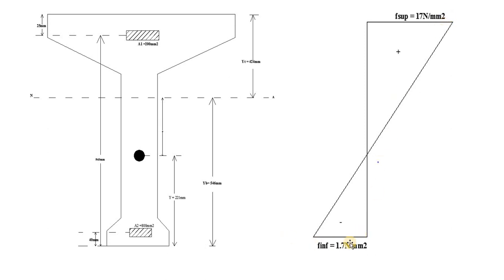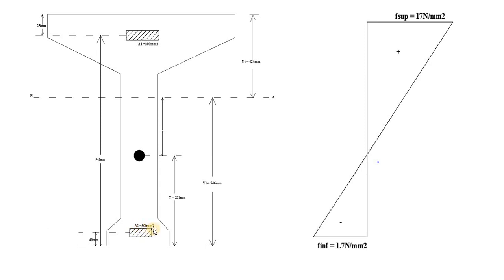Be careful while writing or copying. For tension it is negative — in PSC, tension is always represented with a negative sign. So I have written minus and shown the variation towards the left side. F inferior is 1.7 Newton per mm square. This is an I-section. Inside this I-section, cable 1, that is A1 — they have represented the first cable as A1. Area of the first cable is 200 mm square. This is a second cable, area of the second cable is 800 mm square.